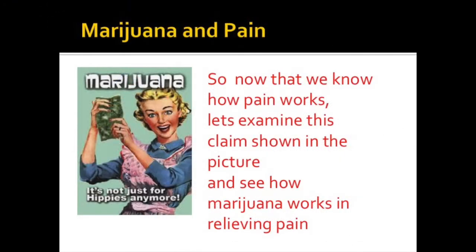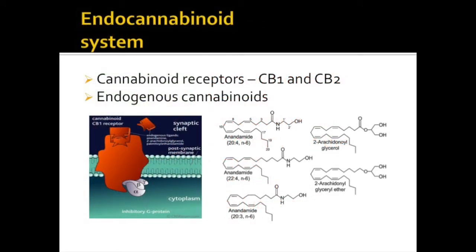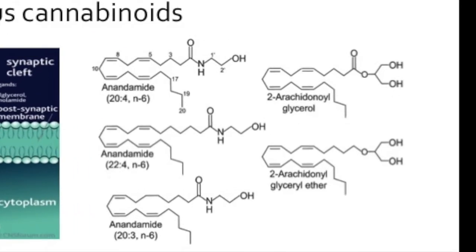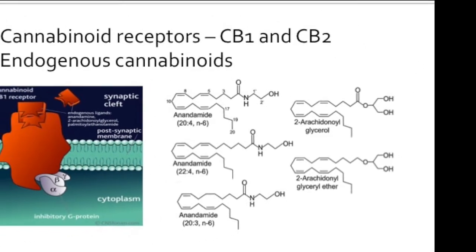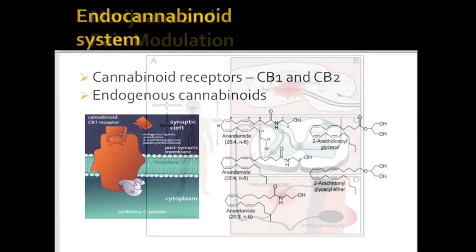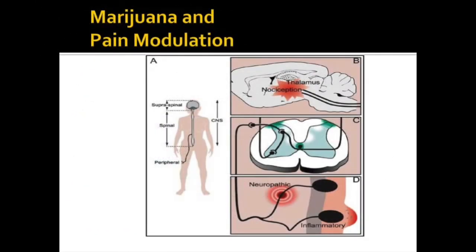Now that we know how we perceive pain, let's find out if marijuana truly relieves pain and how it works. To begin, let's introduce the endocannabinoid system. This system comprises the cannabinoid receptors CB1 and CB2. In addition, we have our own endogenous cannabinoids in our bodies. Five examples of these are shown here, and you can see how similar in structure they are to one another.